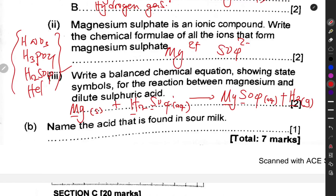Name the acid found in sour milk. Sour milk contains what we call lactic acid. In addition, you need to know the acid found in fruits like oranges and lemons. You should be able to identify different types of acids found in various fruits, plants, and other natural sources — this is very important.